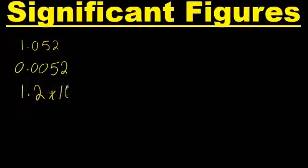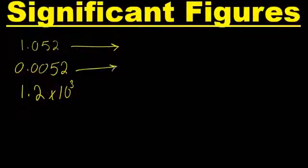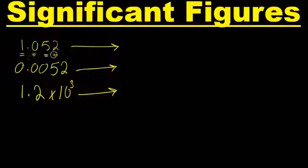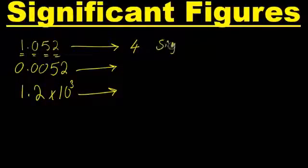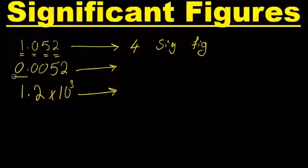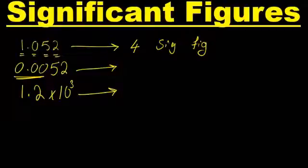In this first example, how many significant figures? The first one has one, two, three, and four — so this one has four significant figures. What about the second one? It has leading zeros. The leading zeros don't count in the significant figures; we count the numbers only, not the leading zeros. So that's one, two — this one has two significant figures.